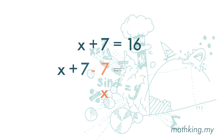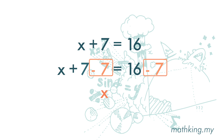Well, this is an equation. If we put a negative 7 on the left hand side, we need to put a negative 7 on the right hand side, so that both left hand side and right hand side are equal. Then x is equal to 16 minus 7, which gives us 9.